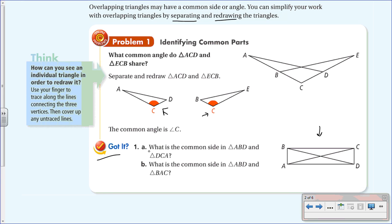For part A — the common side in triangle ABD and triangle DCA. When you separate these triangles and trace over them, the common side is the side traced over twice. The side traced over twice was side AD, so AD is the common side.